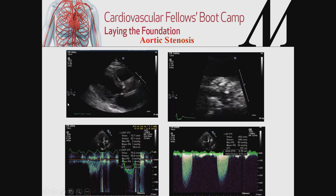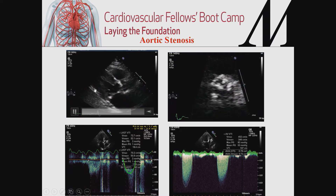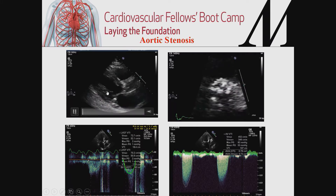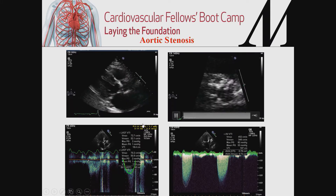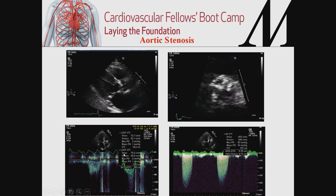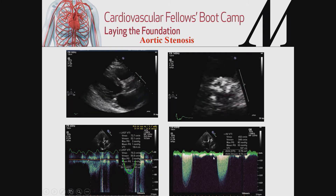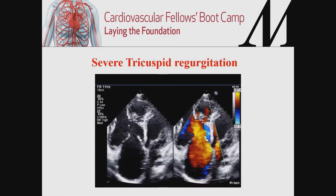Echocardiography is key in valvular assessment. For aortic stenosis, it is the first-line imaging modality. You can see here a calcified, restricted aortic valve with preserved ejection fraction. On a short axis view, there is severe calcification and thickening of the aortic valve leaflets. By using the Doppler equation, we measure velocities across the left ventricular outflow tract and across the aortic valve, which helps us assess the aortic valve area for further interventions.